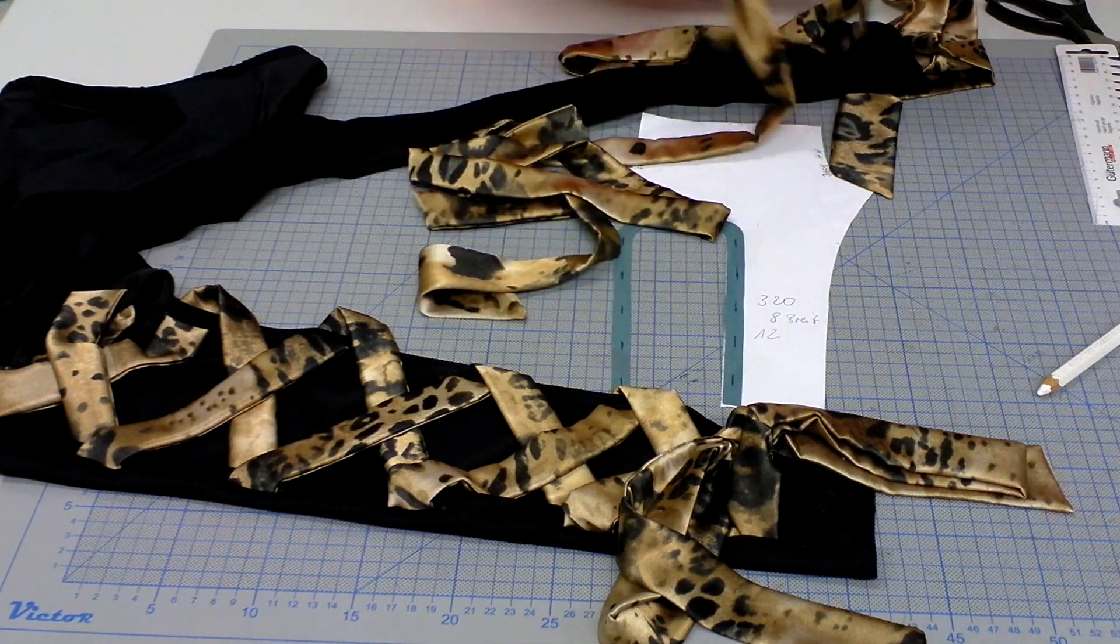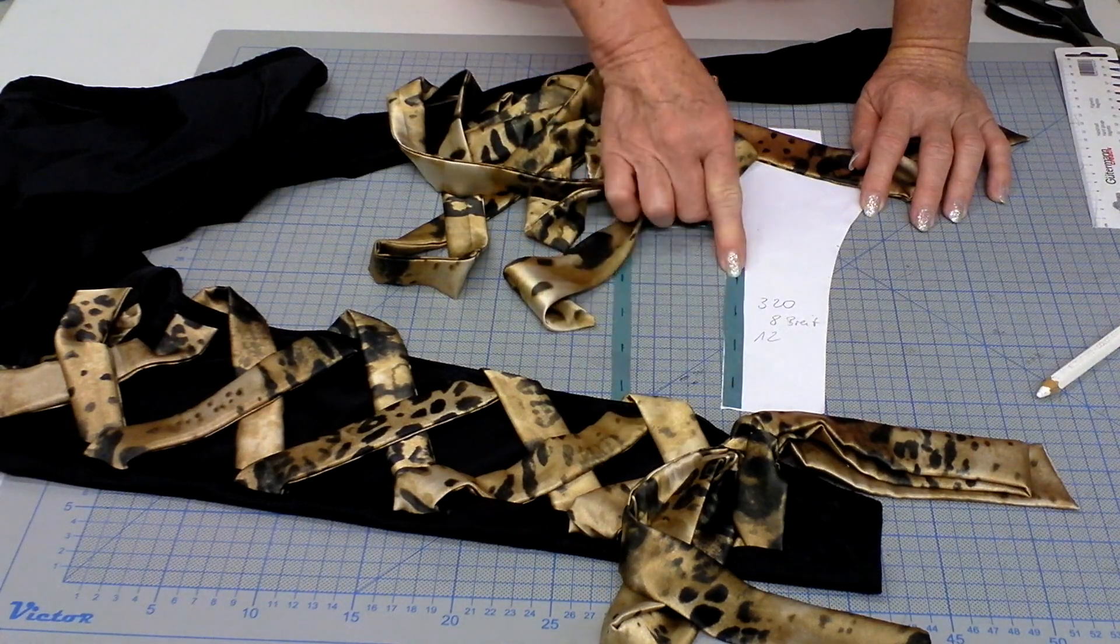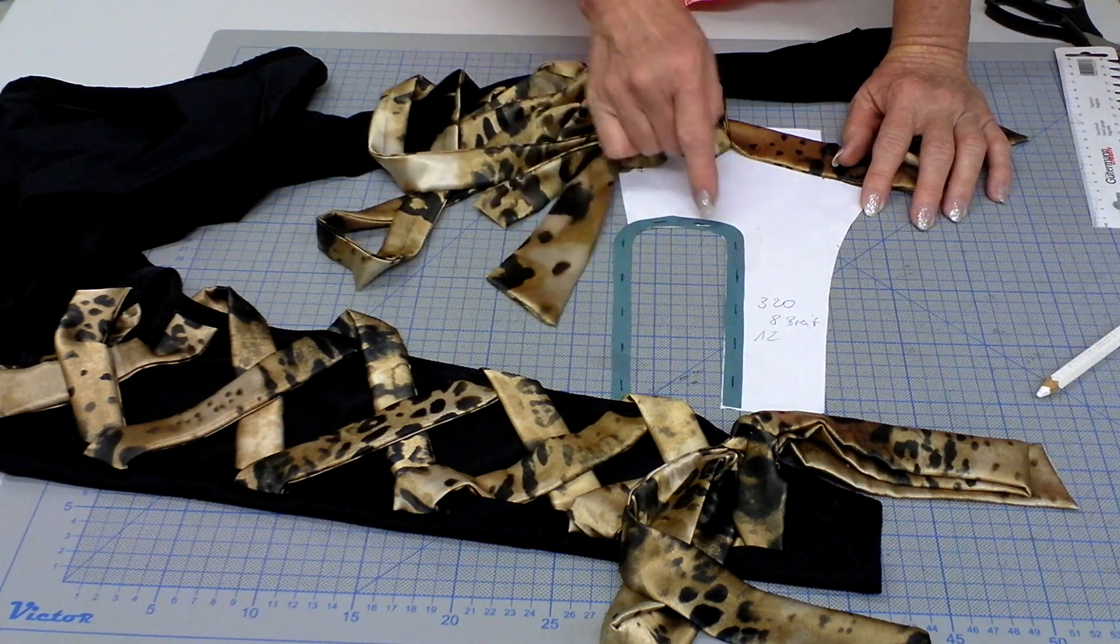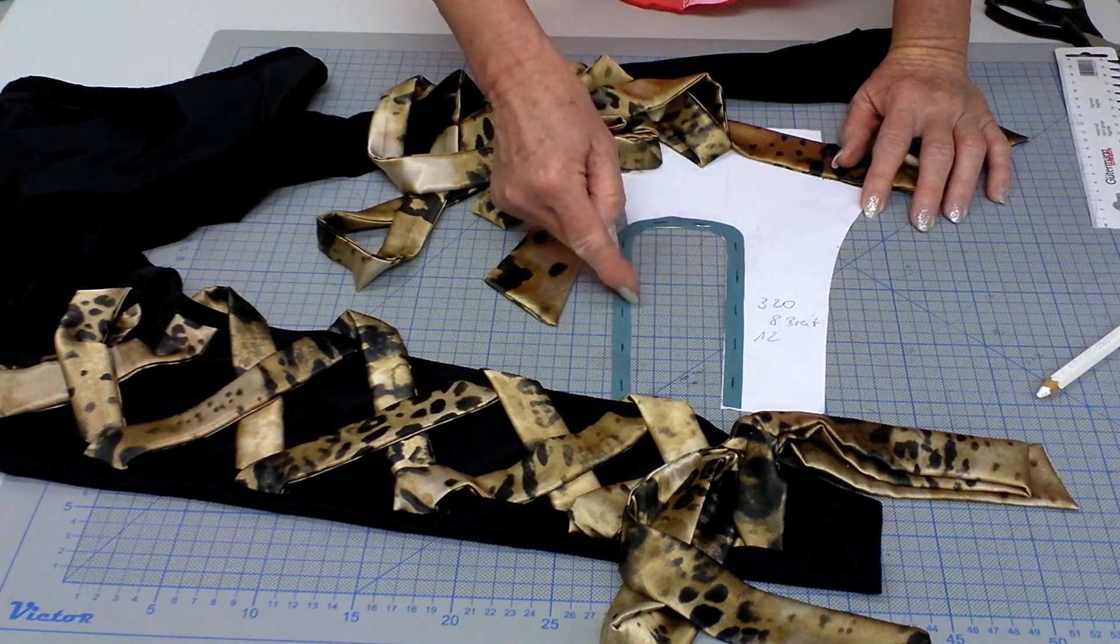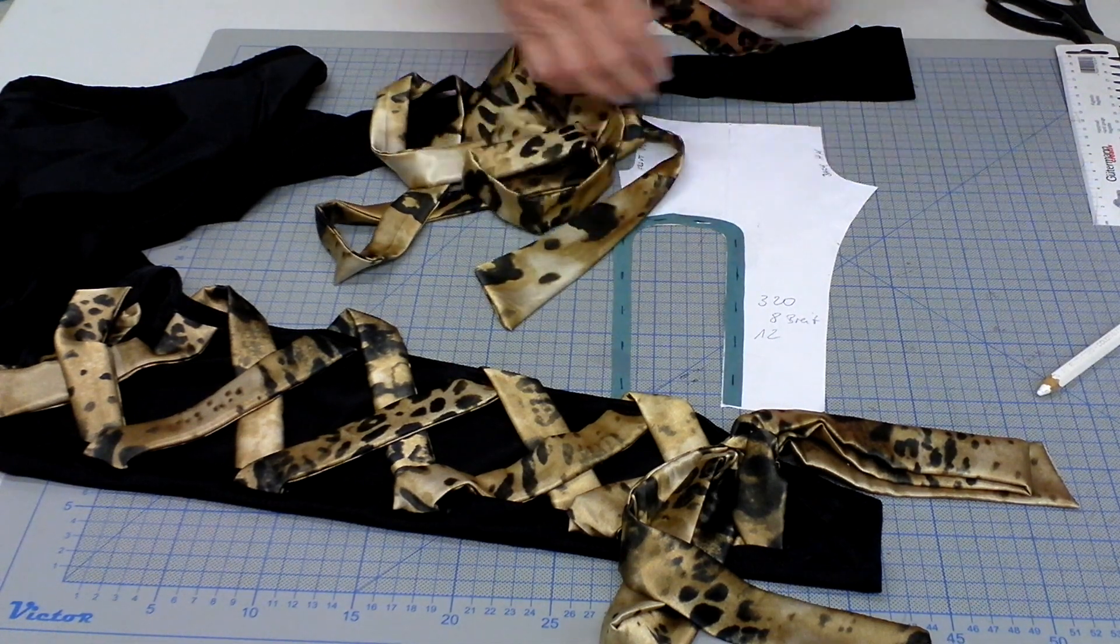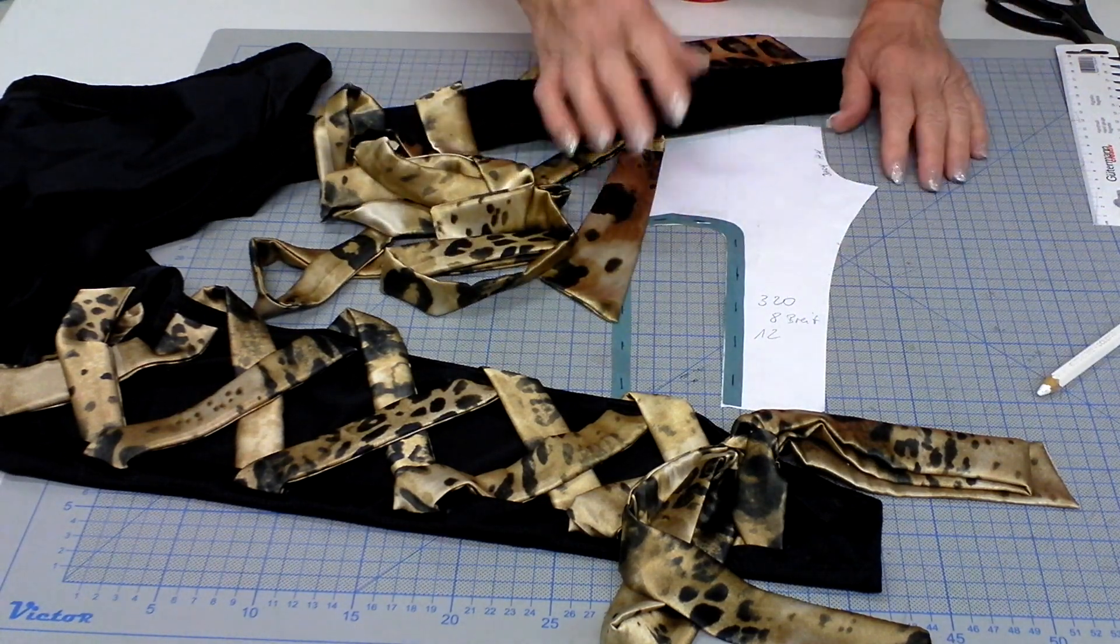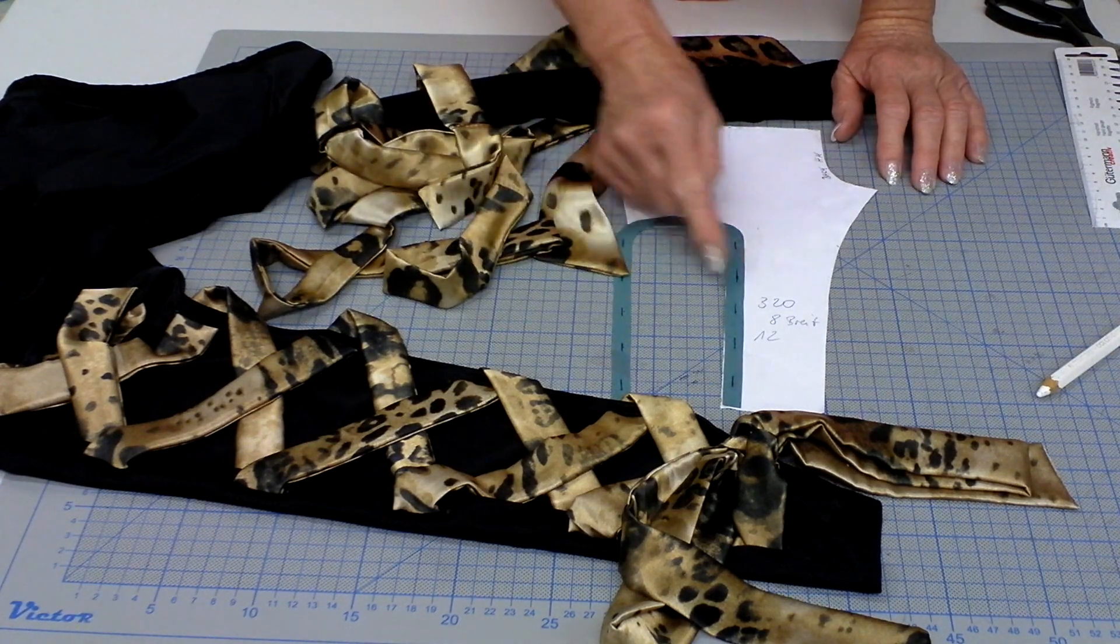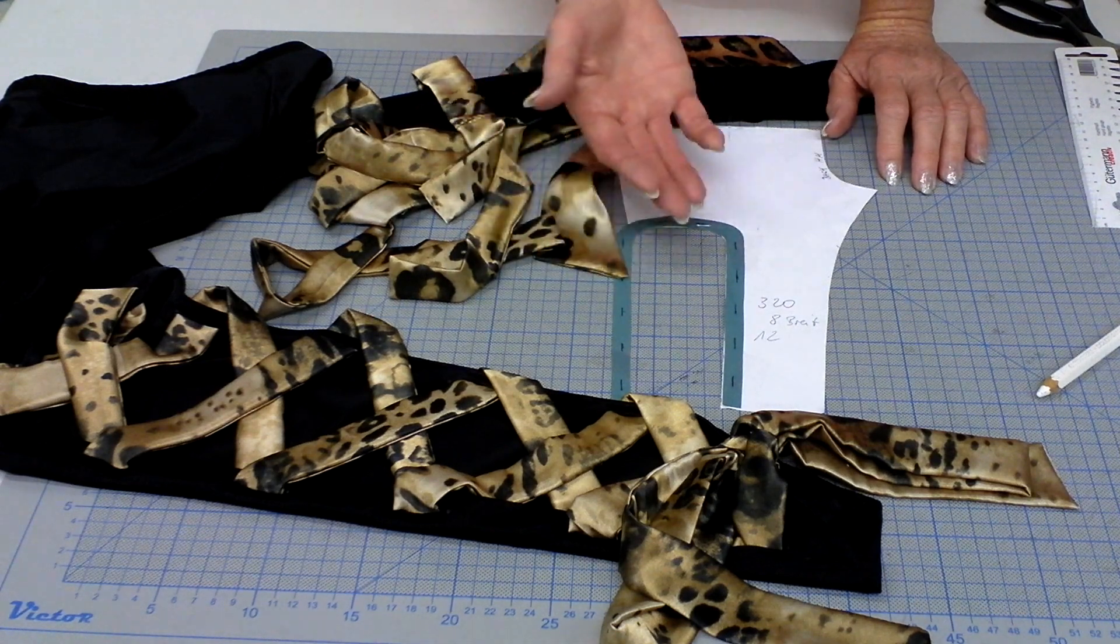But you see on the black it's so difficult to see what I'm explaining to you, that's why I showed it mainly to you with a pattern piece. So as soon as you've done your whole edge here with your facing, you turned it towards the inside and stitched it over, then you have to decide how and where to put your buttonholes.